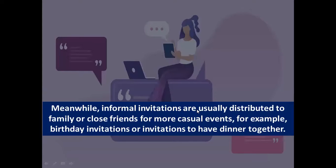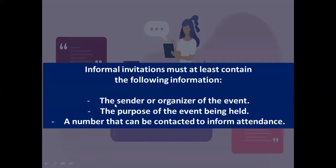Informal invitations are usually distributed to family or close friends for more casual events, such as birthday invitations or inviting someone to have dinner together. Informal invitations must at least contain the following information: the sender or organizer of the event, the purpose of the event, and a contact number for attendance confirmation. So it's not as complicated as the formal invitation — it's more simple.